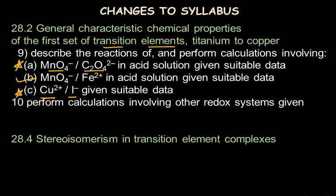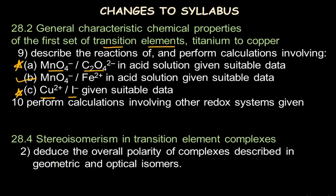Subtopic 28.4, Stereoisomerism in Transition Element Complexes, now requires students to deduce the overall polarity of complexes described in geometric and optical isomers. Earlier we only drew the geometric and optical isomers of a given complex; now we also need to deduce the overall polarity of the complexes. That is the extent of the additions — only a few subtopic changes, with no major topic added.